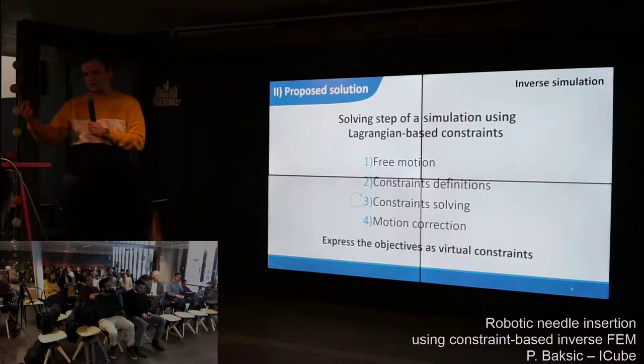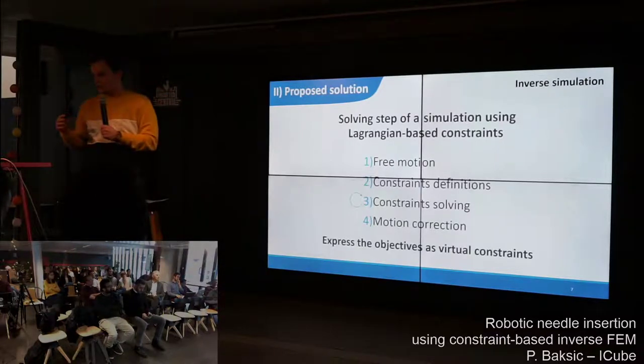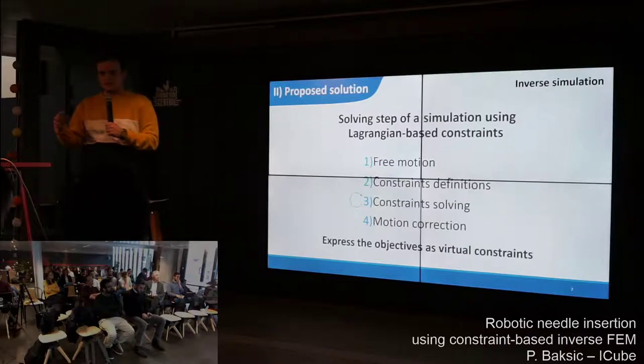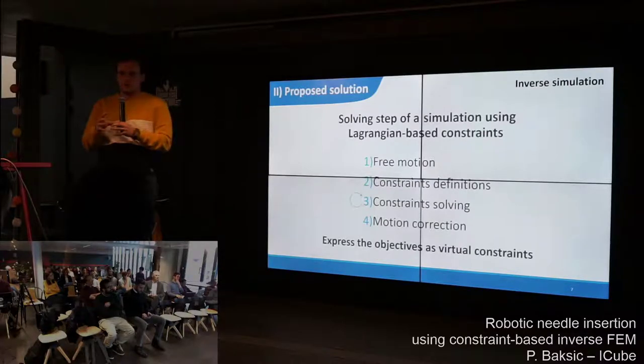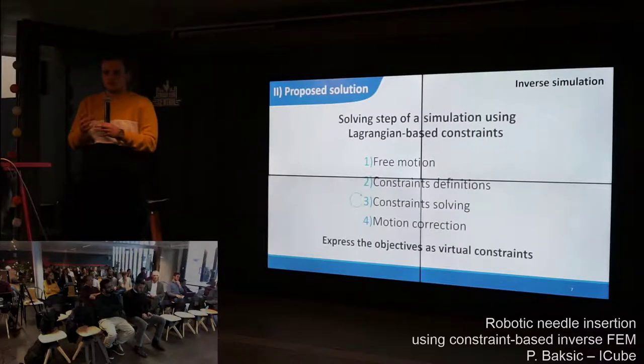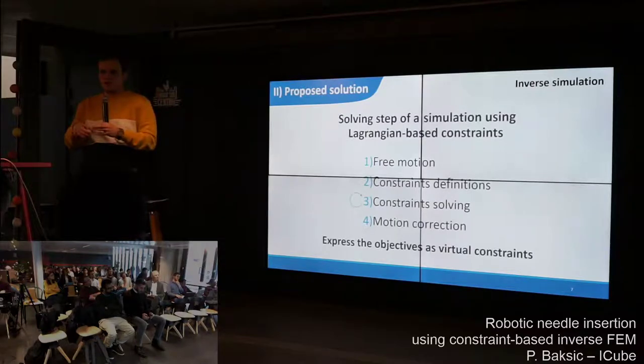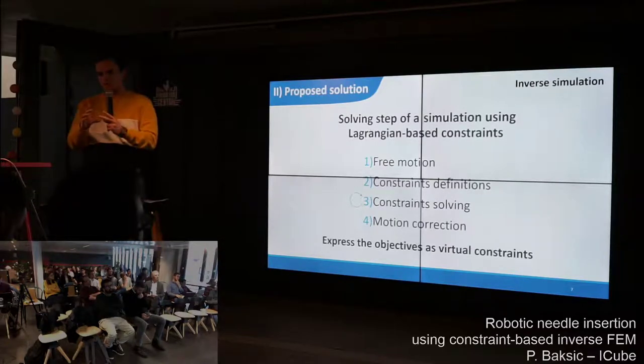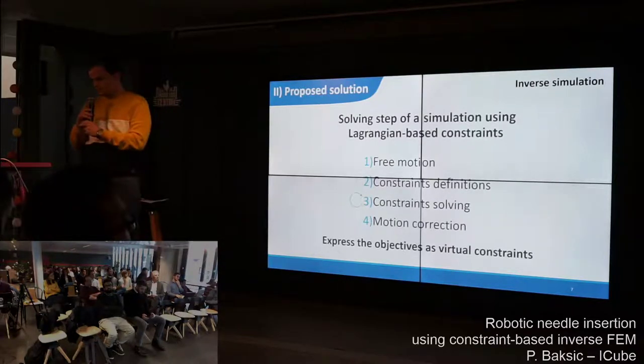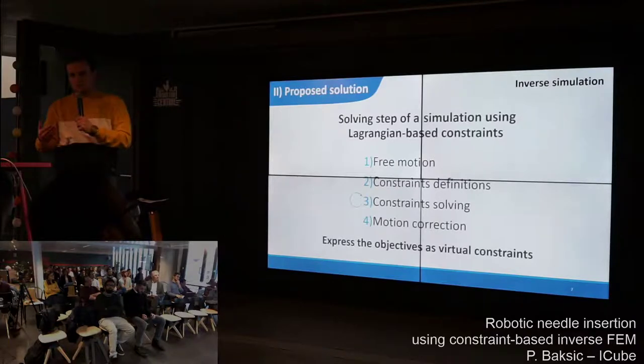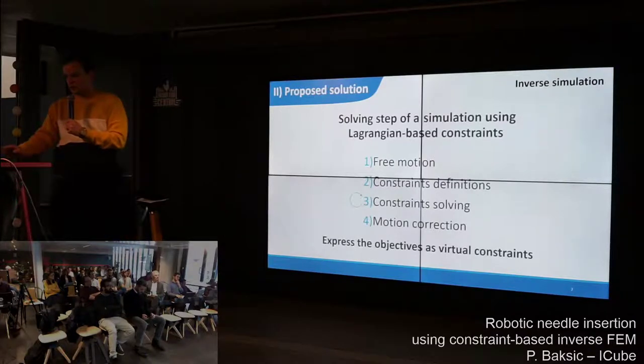Because of the constraint definition made before, we do this solving inside a much smaller space, which is the constraint space. We project the whole model through the constraint, so we have all the information in a smaller space. After this iterative resolution, you have the motion correction.